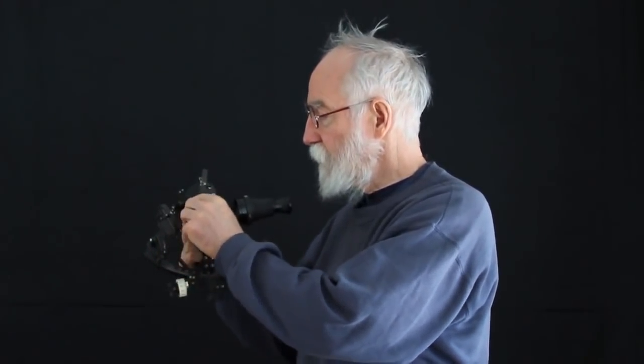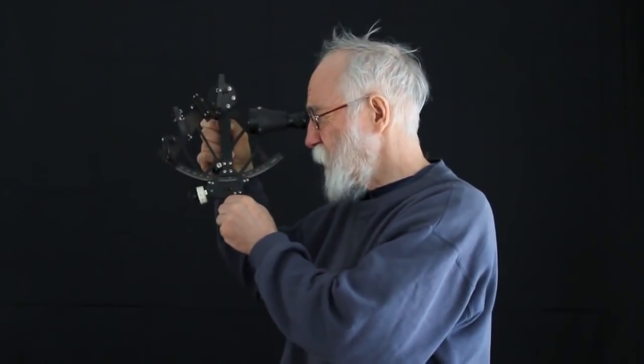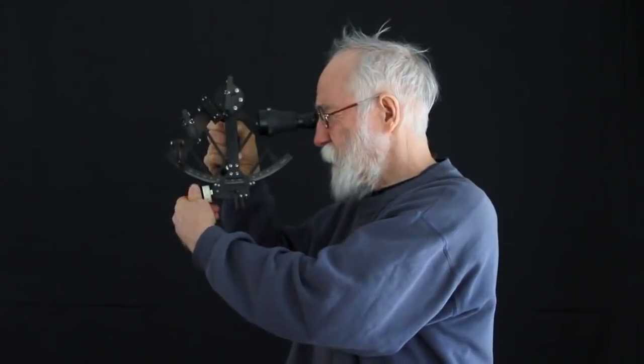This is a classical plot sextant, such as the one I use for thousands of sites on my voyages. This is how I bring down the sun to the horizon. This is the shade for the horizon, this is the shade for the sun, and you have to manipulate it rather quickly. This is the coarse adjustment, and this is the fine adjustment.